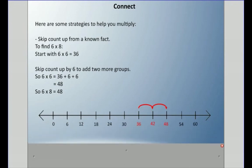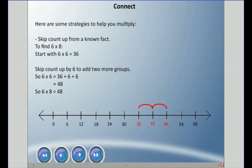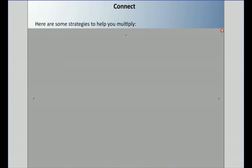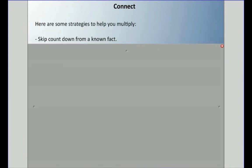If you use a number line, this might help. You know your 36 right here — add six, add six — and it gets you to the answer 48. Another strategy is skip counting down from a known fact.